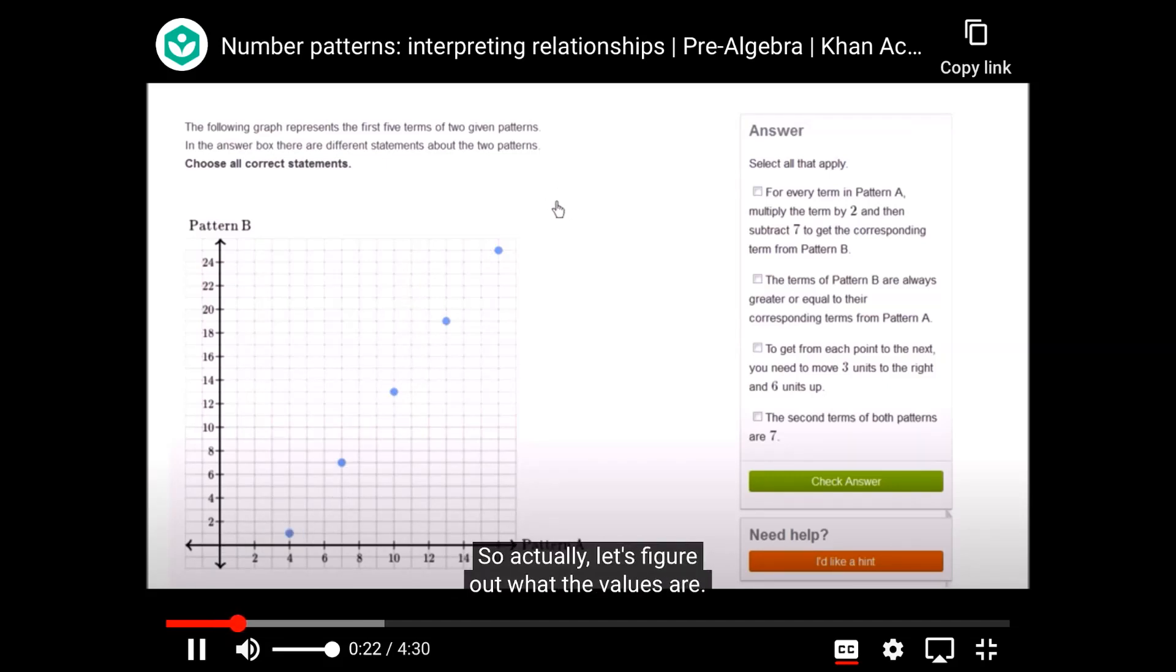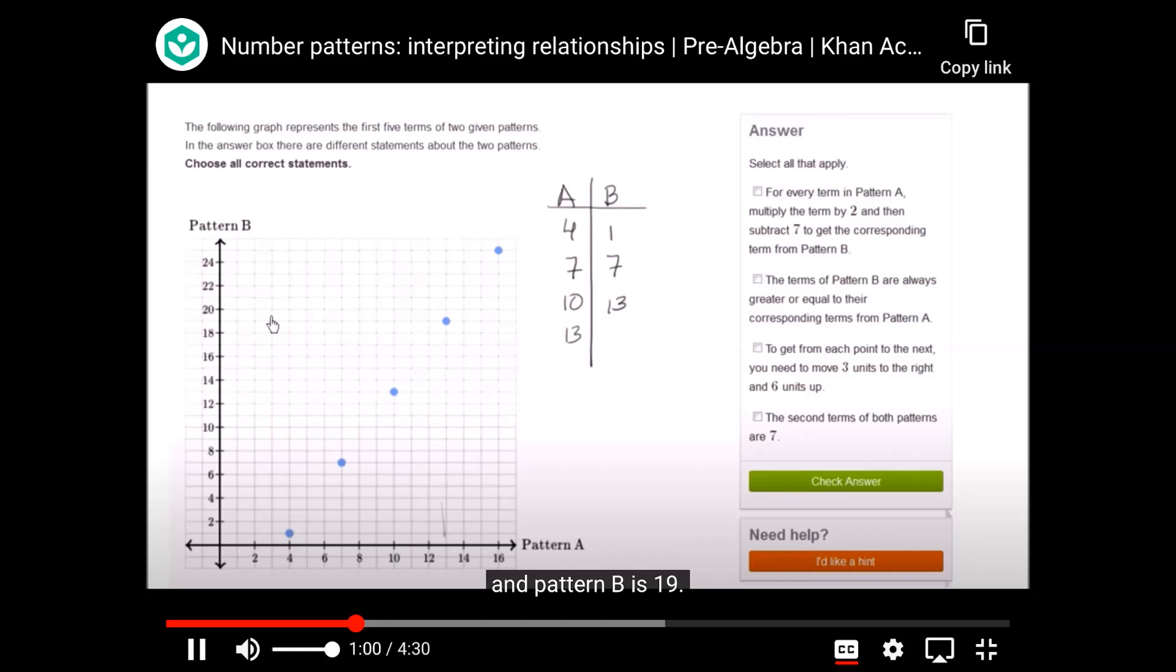Let's figure out what the values are. We have pattern A and then we have pattern B. The first term for pattern A is 4. When pattern A is 4, the first term for pattern B is 1. The second term for pattern A is 7. When pattern A is 7, pattern B is also 7. Third term, pattern A is 10, and pattern B is 13. Then fourth term, pattern A is 13, pattern B is 19. Then finally, fifth term, pattern A is 16, and pattern B is 25.